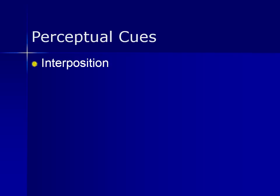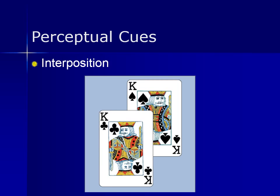Another perceptual cue is interposition. Objects closer to us may cut off part of our view of more distant objects, thus giving rise to an impression of depth. In the image here, we can see two playing cards with one corner covering the other. Our mind translates this as one card covering over the other — one being nearer than the other — rather than one card having a shape with the corner cut out. Remember the antelope in the slide with the hunter? We typically don't see the hill as having an antelope shape in it; we see the hills as one behind the other. This is an example of interposition.